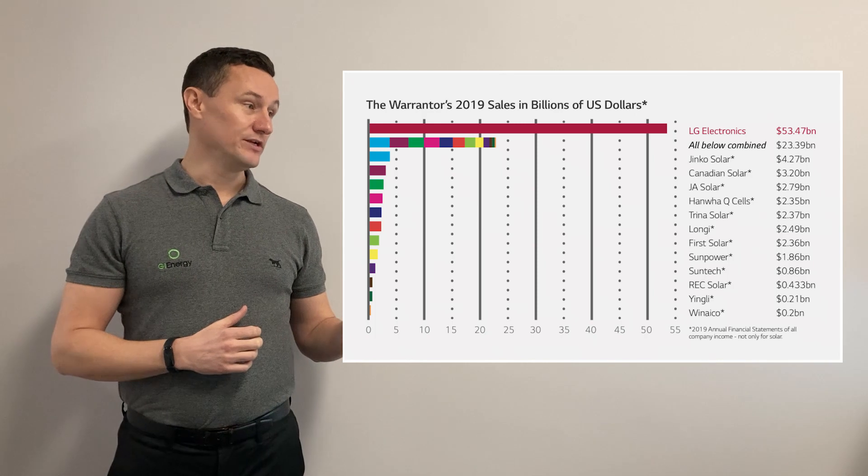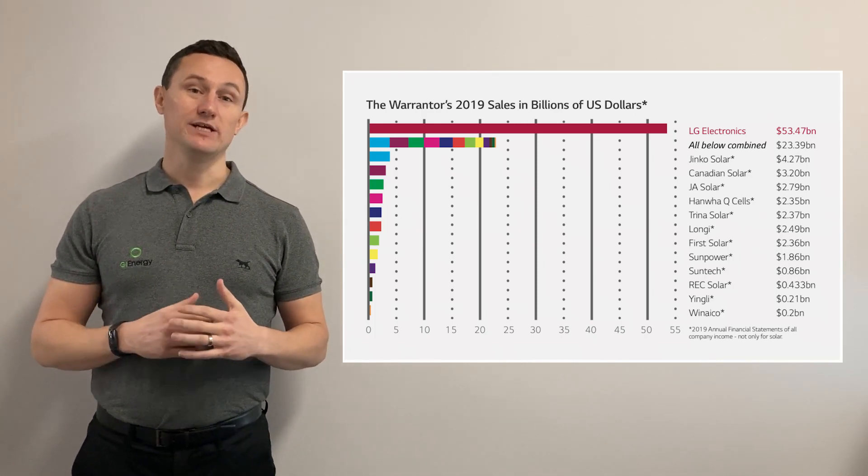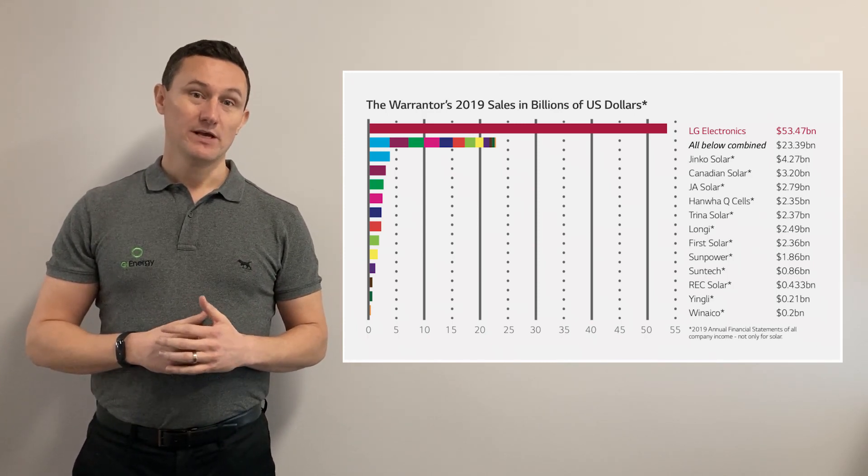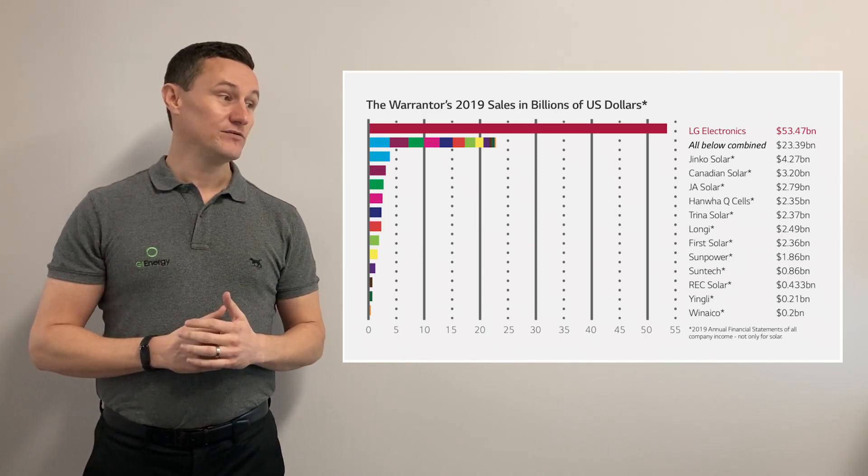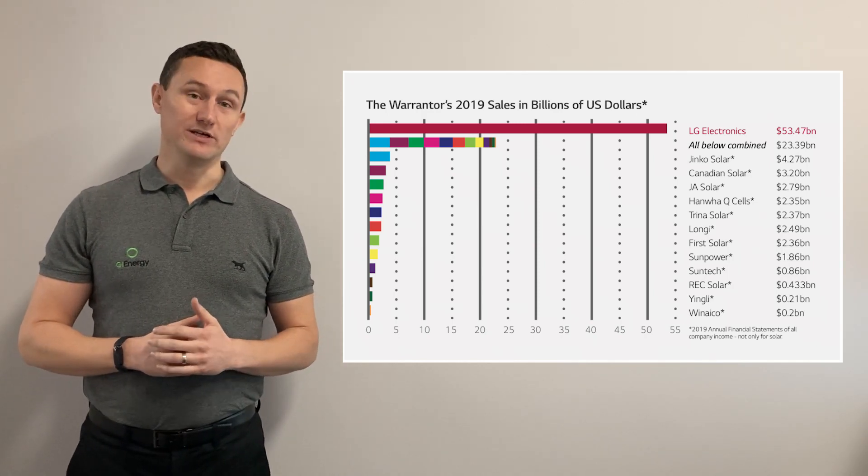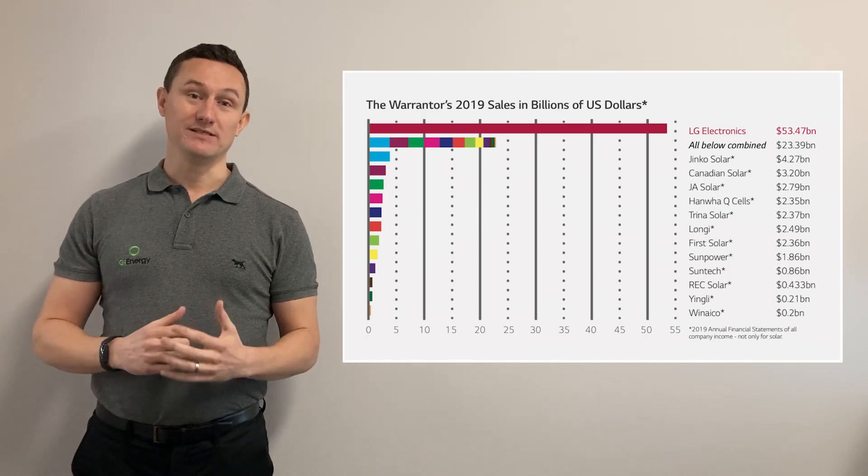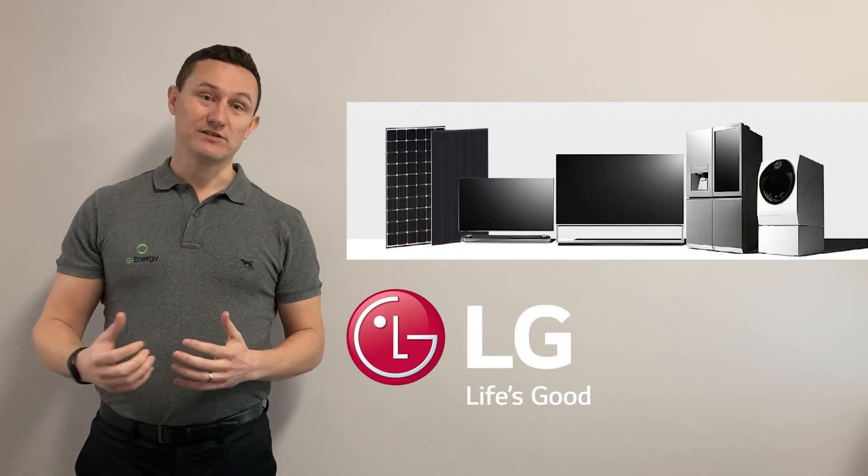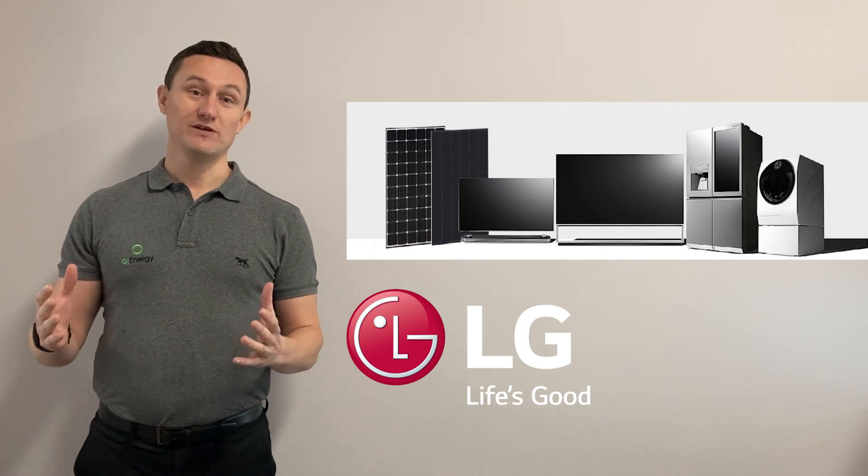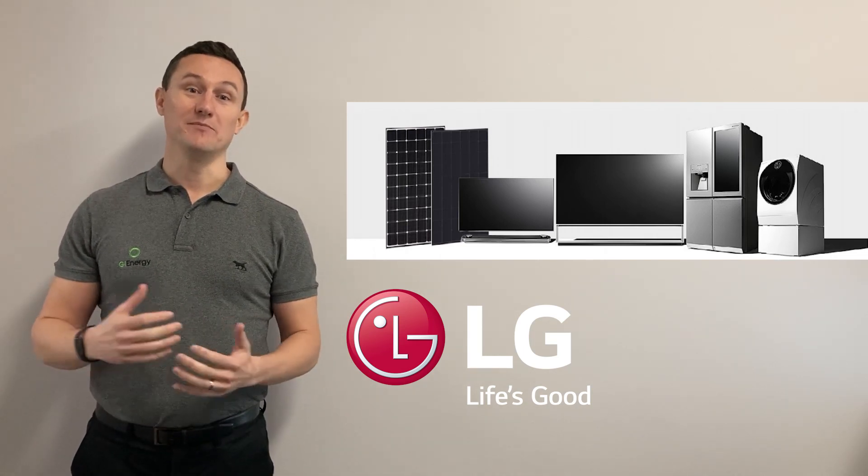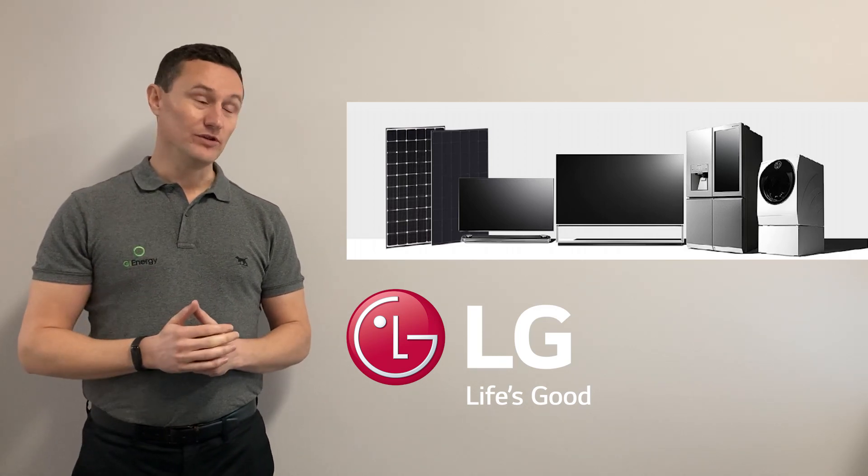What that chart is showing is that all of those revenues combined equals $23.39 billion US dollars in sales. LG Electronics as a company, their sales is $53.47 billion US dollars. So that really should show you just how much of a gigantic business LG are. They obviously manufacture things like televisions and fridges and washing machines, but they also go so far to even manufacture things like toothpaste. So they're a huge, huge company, a massive household name.